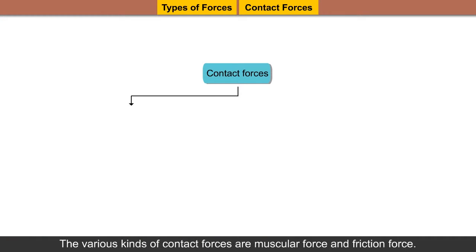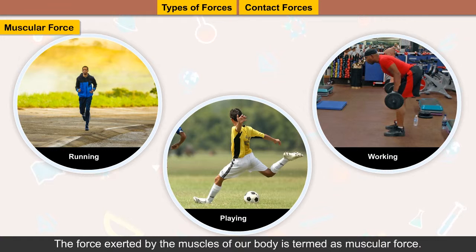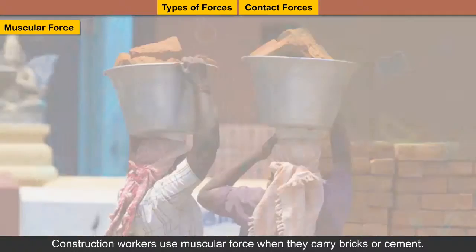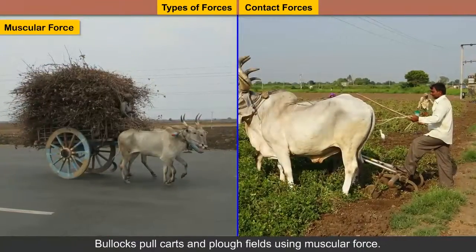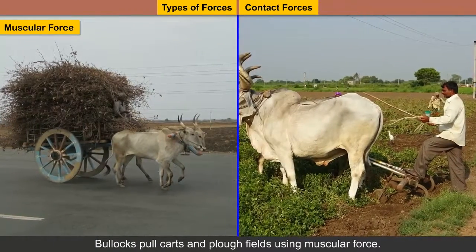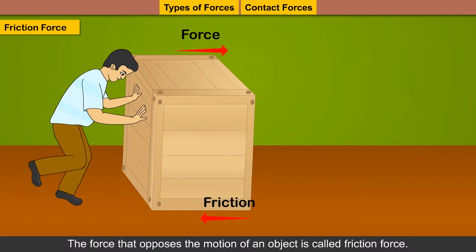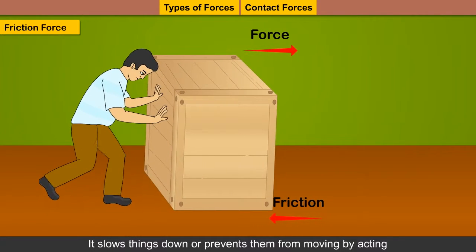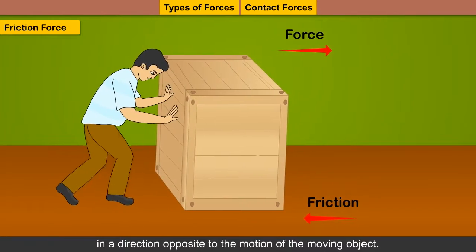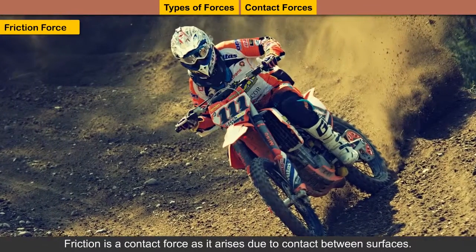Muscular force: The force exerted by the muscles of our body is termed as muscular force. Construction workers use muscular force when they carry bricks or cement. Bullocks pull carts and plow fields using muscular force. Frictional force: The force that opposes the motion of an object is called frictional force. It slows things down or prevents them from moving by acting in a direction opposite to the motion of the moving object. Friction is a contact force as it arises due to contact between surfaces.